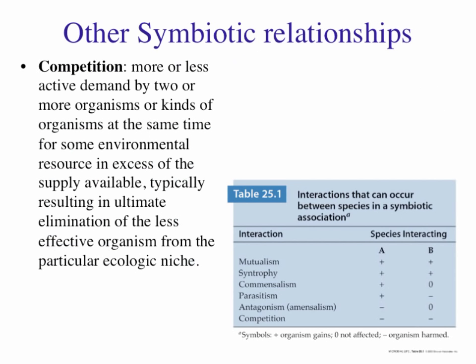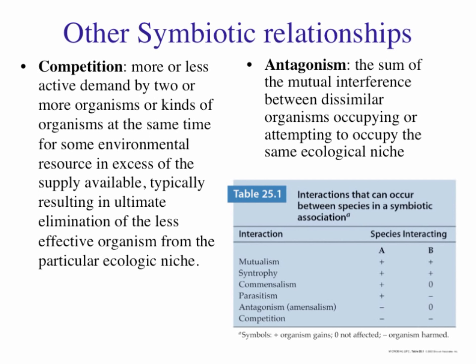Competition involves an active demand by two organisms for a limited resource—both organisms experience harm because they're competing for an environmental resource that is not in excess supply. Antagonism is different: one organism doesn't benefit, but the other is harmed. In antagonism, you're making another organism's life miserable without gaining anything yourself. In competition, both organisms experience harm, whereas in antagonism, only one is harmed.